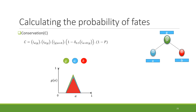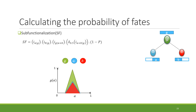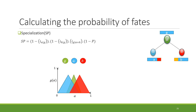For conservation, A and B both conserve g, so all i-values are one. For sub-functionalization, A and B together perform the same function as g, so the percentage area of g covered by A plus B equals one. For specialization, A and B together perform the same function as g — so the percentage area of g covered by A plus B should be one — and also they find new functions, meaning the percentage area of A and B covered by g should be greater than zero but not close to one.